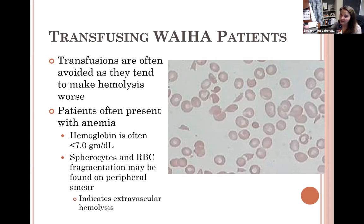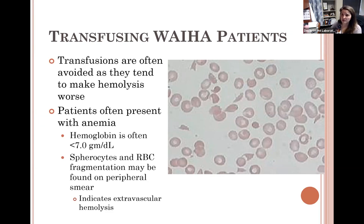Our initial recommendation is do not transfuse at all — rather give supportive therapy like steroids or oxygen. If a patient does have an alloantibody that we identified, phenotypically matched units will prevent those donor cells from being attacked. Sometimes these patients may even have a splenectomy to try to reduce the amount of cell destruction.